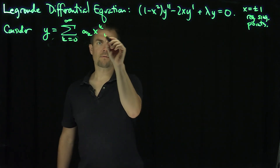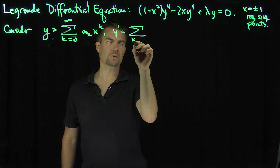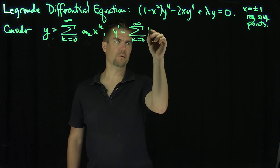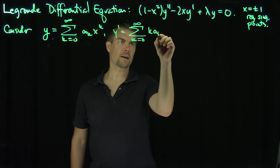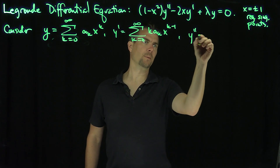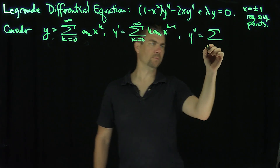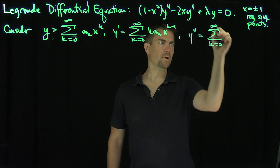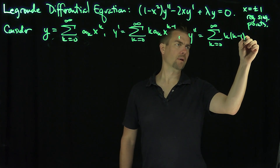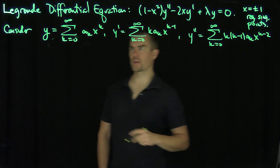The standard setup gives us y' equal to the sum from k = 0 to infinity of k·a_k·x^(k-1), and y'' is the sum from k = 0 to infinity of k(k-1)·a_k·x^(k-2). That's our setup.